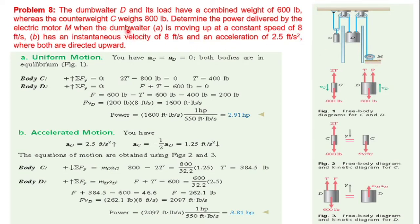Two conditions are given. First condition: when the dumb waiter D is moving up at a constant speed of 8 feet per second — so acceleration is zero. Second condition: an instantaneous velocity of 8 feet per second and an acceleration of 2.5 feet per second squared, both directed upward.